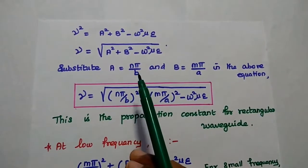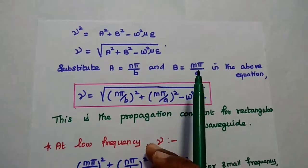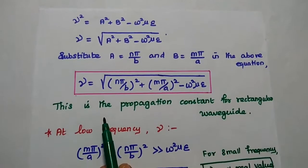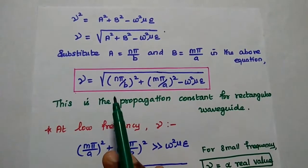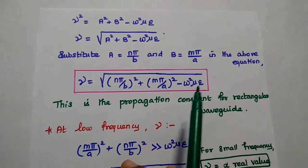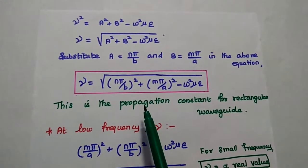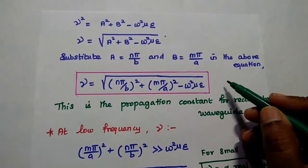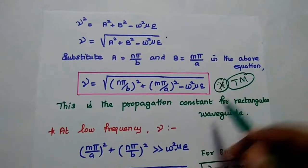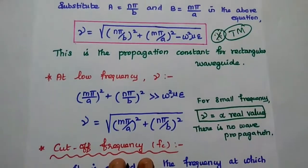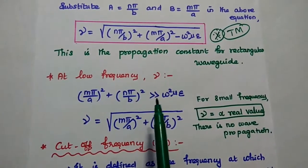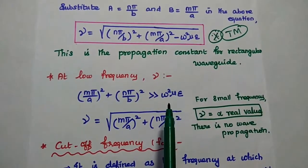Here A is equal to Nπ/b and B is equal to Mπ/a. Substituting these two values, we get gamma is equal to square root of (Nπ/b) whole squared plus (Mπ/a) whole squared minus omega squared mu epsilon. Next, at low frequency range, (Mπ/a) whole squared plus (Nπ/b) whole squared is far greater than omega squared mu epsilon.